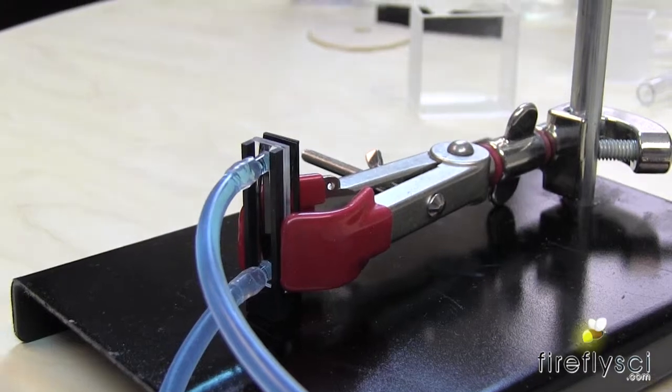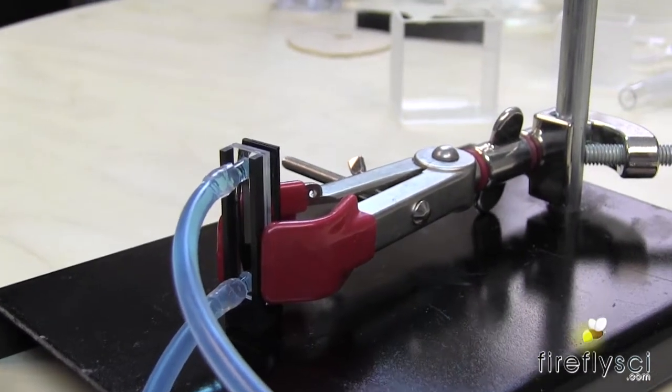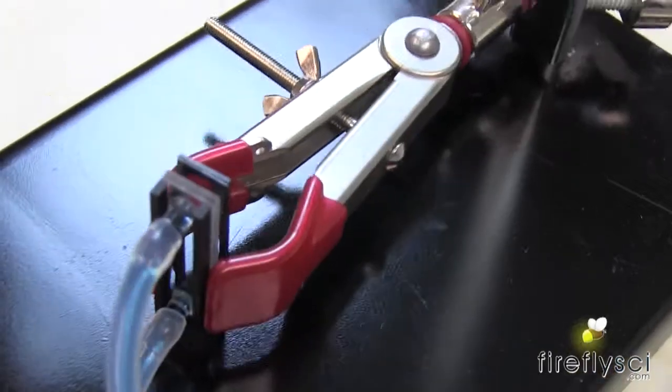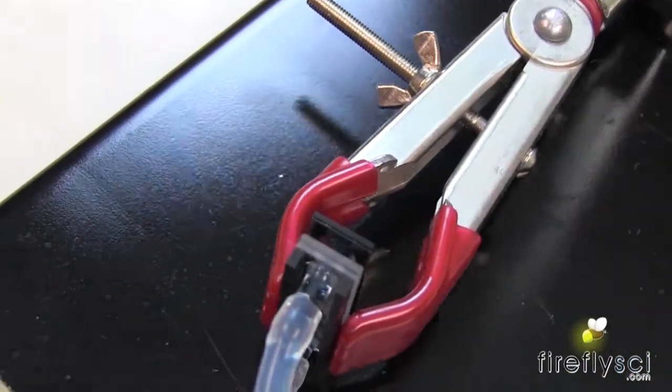Okay, so I have sample running through the cuvette and I just want to highlight that there is no leakage coming from any of the sides.